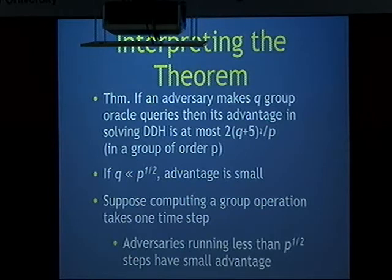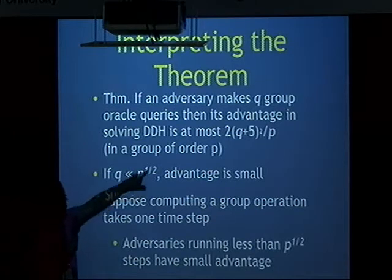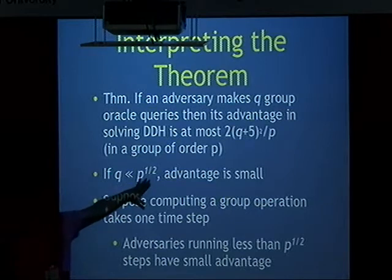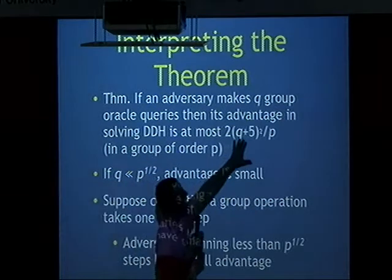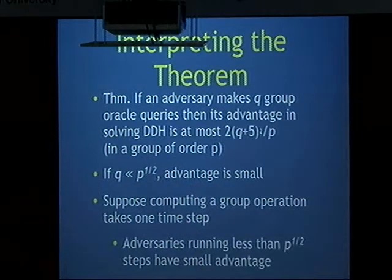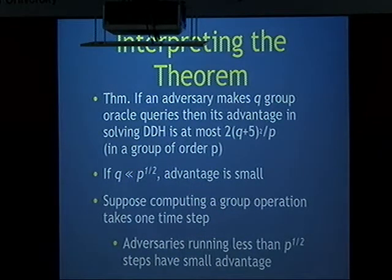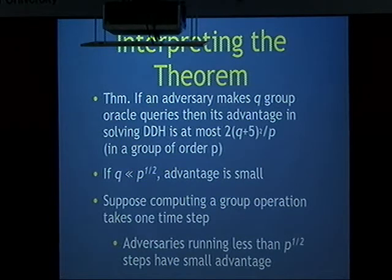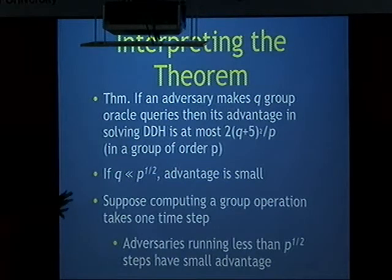It's a theorem, but theorems can have uninteresting consequences. The interesting consequence here is that if q is much smaller than the square root of p, we end up with a very small advantage. For example, if q is about p^(1/4), then q² is about p^(1/2), and the advantage is at most about √p. So if p is 160 bits, the adversary's advantage is bounded at about 2^(-80), which is acceptable.